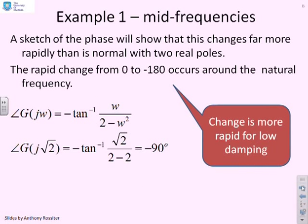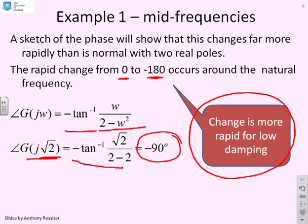What about the phase? If I put in the natural frequency root 2 and substitute into the phase, I get 90 degrees. But what's more significant is when you do the phase plot, the change from 0 to minus 180 degrees, which occurs around the natural frequency, is much more rapid than if you had two real roots. We will demonstrate that in a moment.